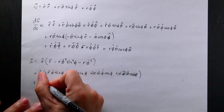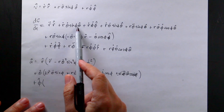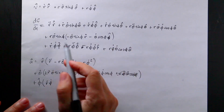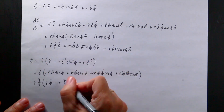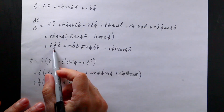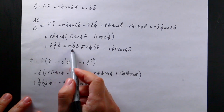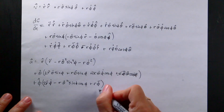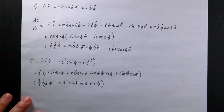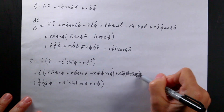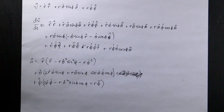And then for the phi-hat terms: I get r-dot phi-dot, then minus r theta-dot-squared sine phi cosine phi from that cross term, then another r-dot phi-dot — so two of those — and finally r phi-double-dot. So there's my phi-hat component. Altogether: the r-hat component, the theta-hat component, and the phi-hat component give you the full acceleration in spherical coordinates.